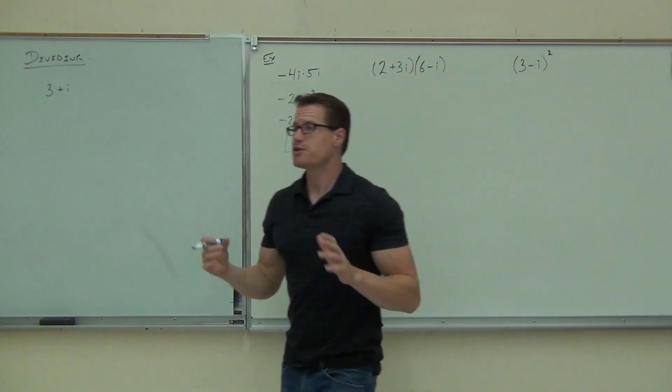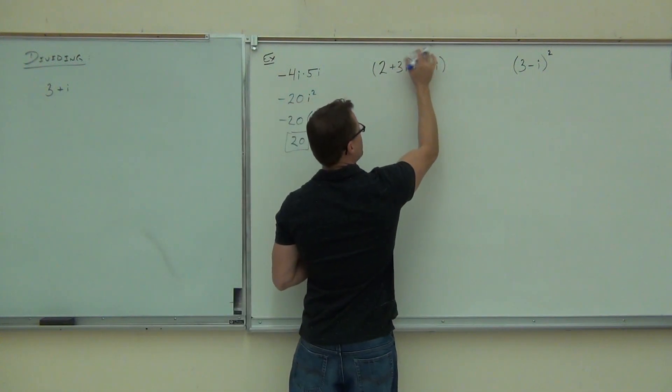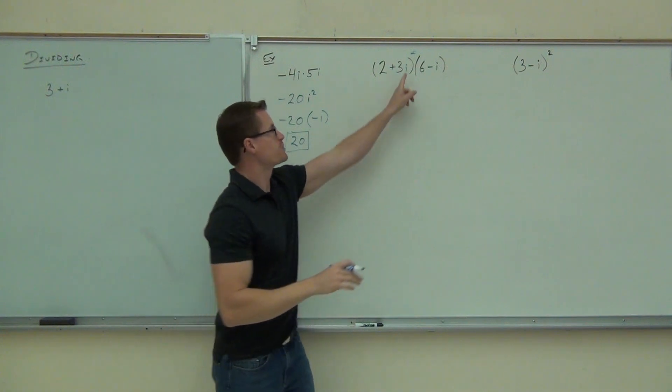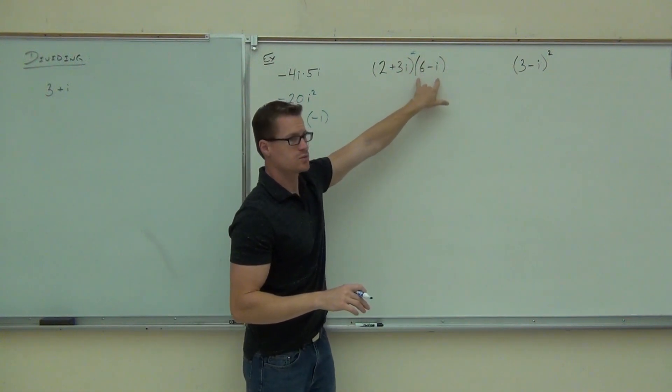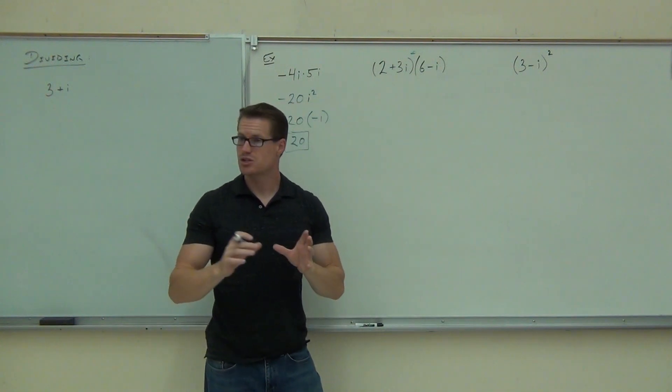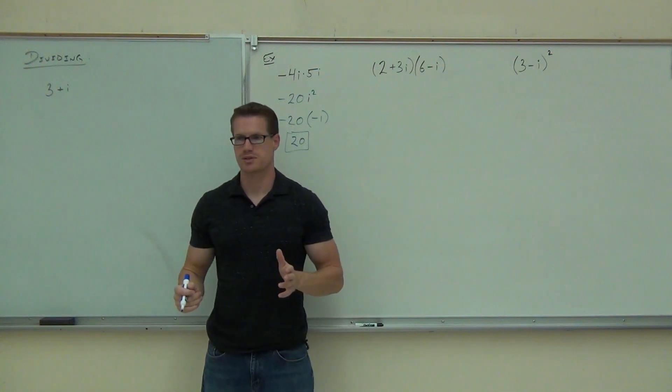Next up, we're certainly going to have to distribute. This is different than if I would have had like a plus in the middle of that or a minus in the middle of that. There, that'd be a different story. I wouldn't be foiling that. I would just be distributing the negative to the last two terms and then combining like parts. So you need to see the difference between addition, subtraction, and multiplication.